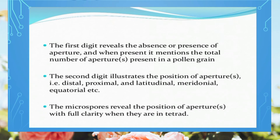If we discuss one by one: the first digit indicates the presence or absence of the aperture, and if the aperture is present, what is its number — i.e., how many apertures are present on the pollen grain. The second digit P in NPC stands for position of the aperture.